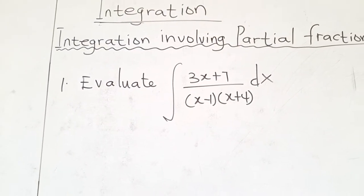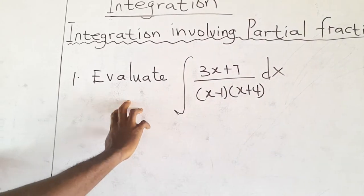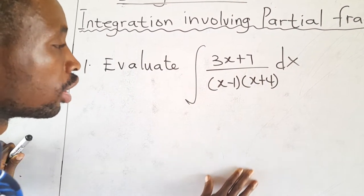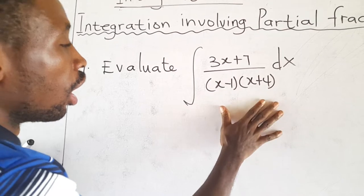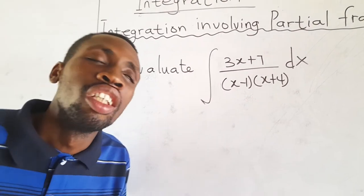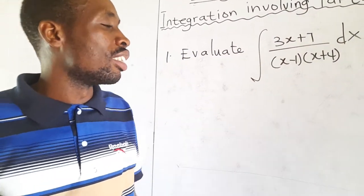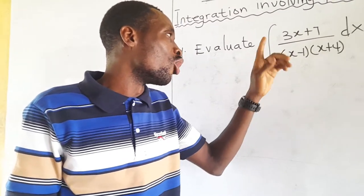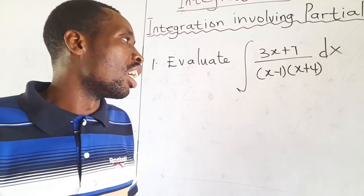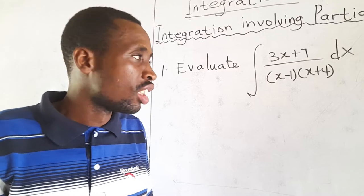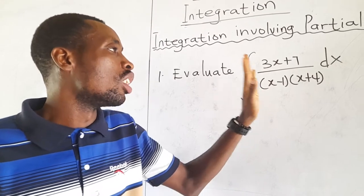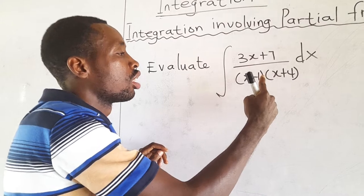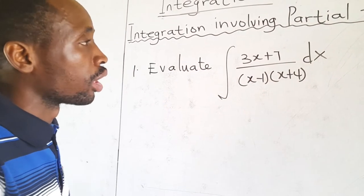So look at our first question. It says: evaluate the integral of (3x + 7) over (x − 1)(x + 4). Now, you can't do this using the simple integration rule, neither can you do this using integration by substitution. So the best thing to do is to resolve this into partial fractions.